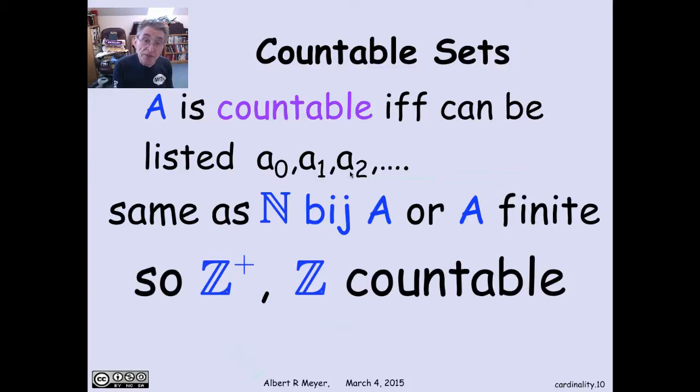What we've just figured out from the previous examples is that the positive integers are countable, and all the integers are countable, because in both cases we exhibited bijections to the non-negative integers.